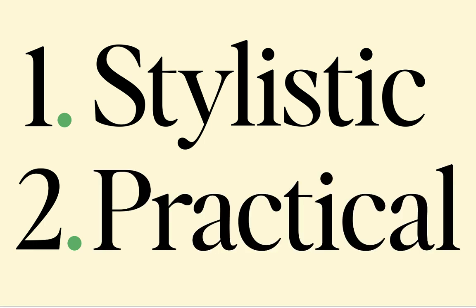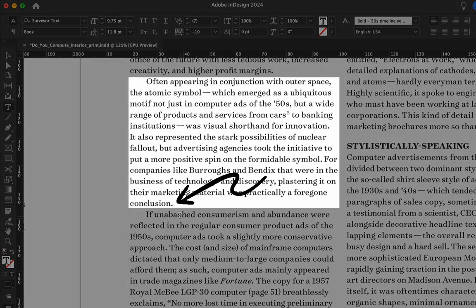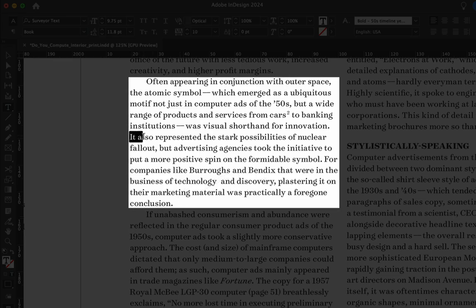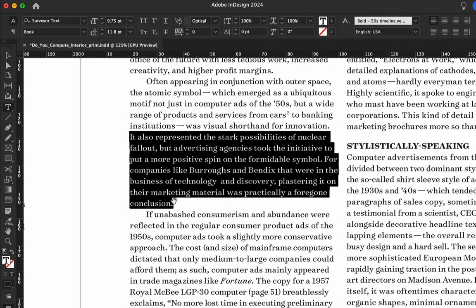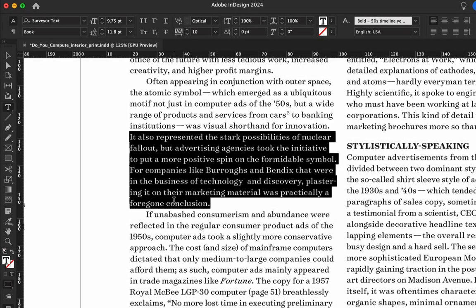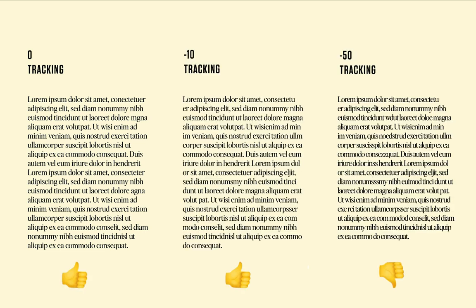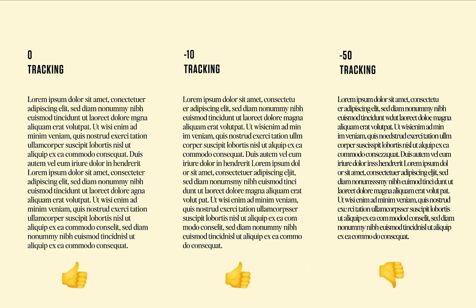Second, there's practical tracking. This is usually for fixing issues in your sentences or paragraphs, like bad line breaks or overset text. But here's the thing — when you're using practical tracking, try not to go more than 10 units either way, because anything more than that starts to look a little bit weird.